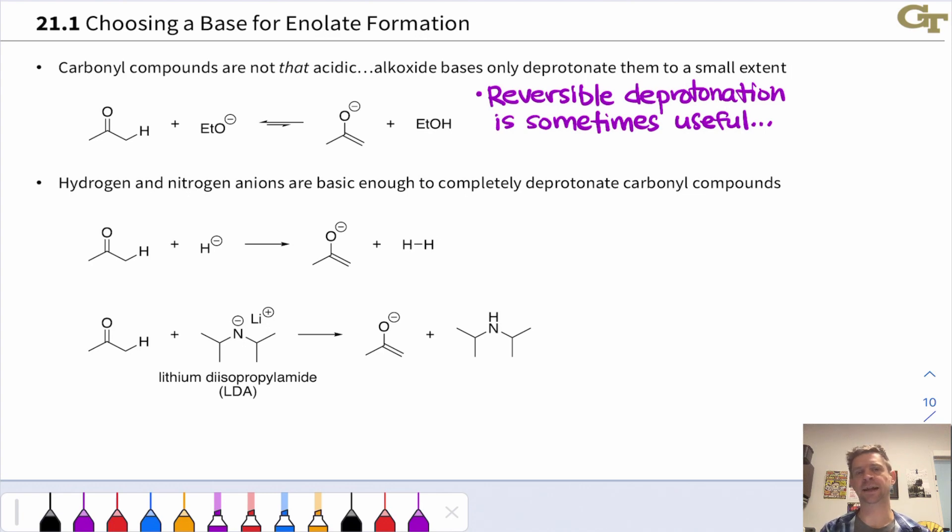If we want to generate the enolate quantitatively in 100% yield, 100% conversion from the starting carbonyl compound, we've got to ramp up the strength of the base. And the two types of bases typically used here are hydrogen anions and nitrogen anions. So hydride bases such as sodium hydride, and N- bases such as sodium amide, NaNH2 and others.